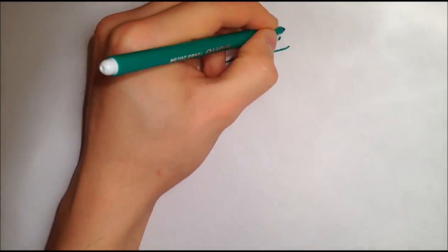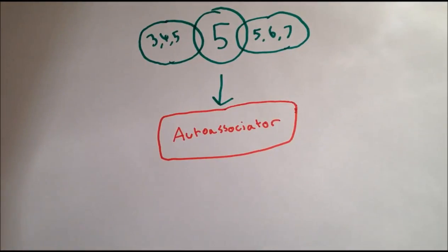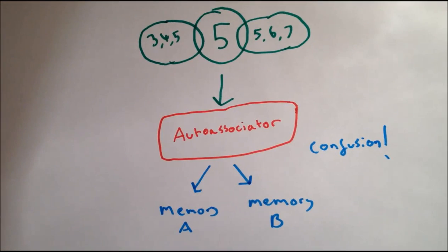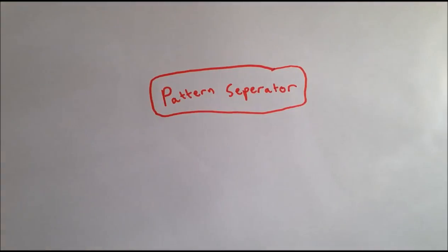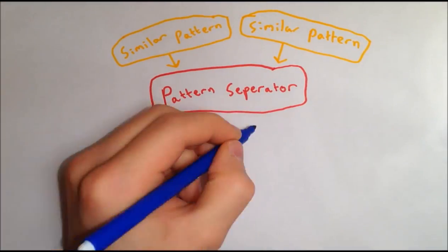Each activates a unique set of neurons and results in separately indexed memories. Now, when pattern completing, there is an overlap between the two inputs. This means the outputs may be either of the memories and the network will get confused. To avoid this, we need a process known as pattern separation.